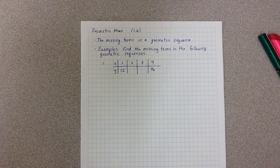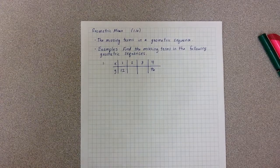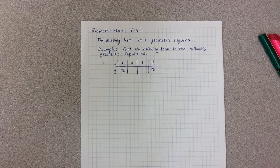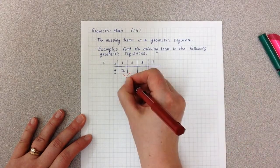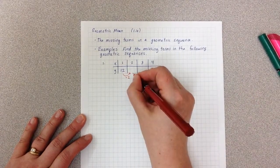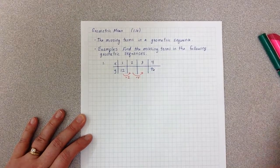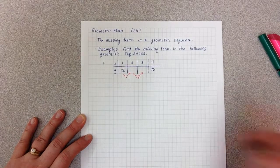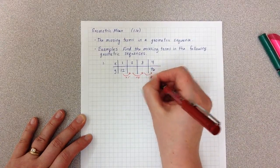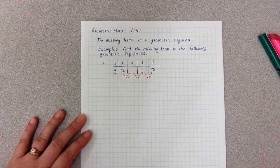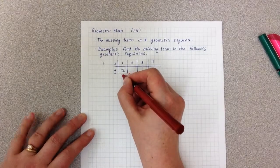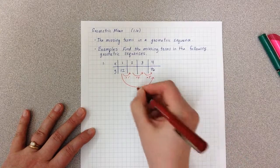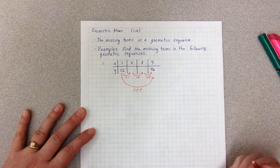Find the missing terms in the following geometric sequences. The first thing to remember is that in geometric sequences, I'm multiplying by something each time. So to go from 12 to the next term, I multiply by R. From the second term to the third, I multiply by R again, and from the third to the fourth, I multiply by R again. So to go from 12 all the way to 96, I am multiplying by R three times.